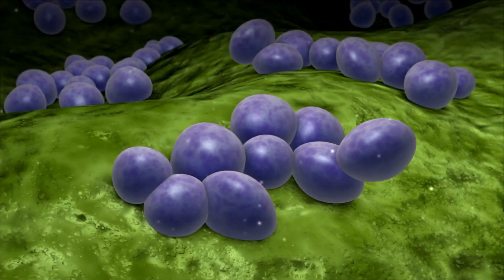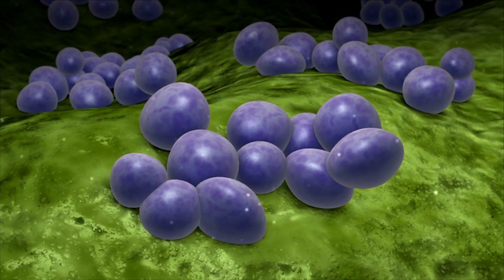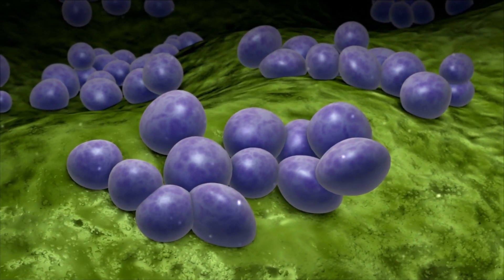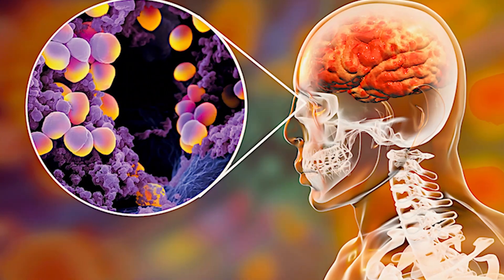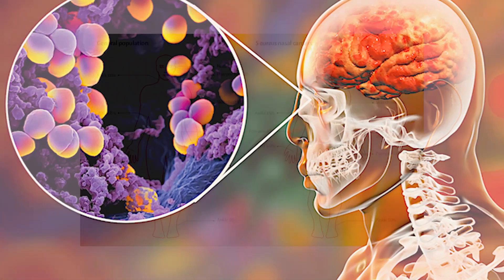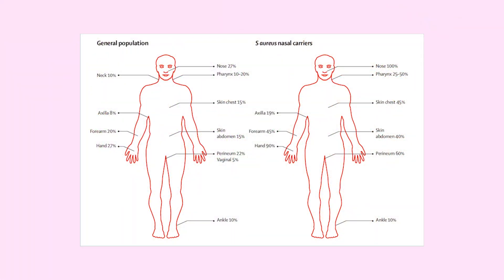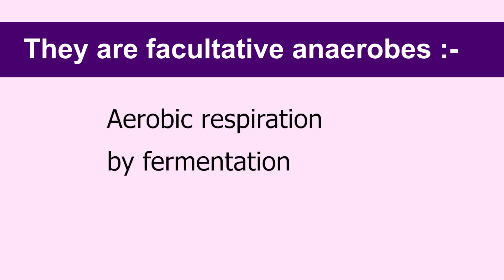Staphylococcus aureus are gram-positive spherical cells that occur in grape-like clusters. It colonizes mainly the nasal passage, but may be found regularly in most other anatomical locations as well. They are facultative anaerobes that grow by aerobic respiration or by fermentation.